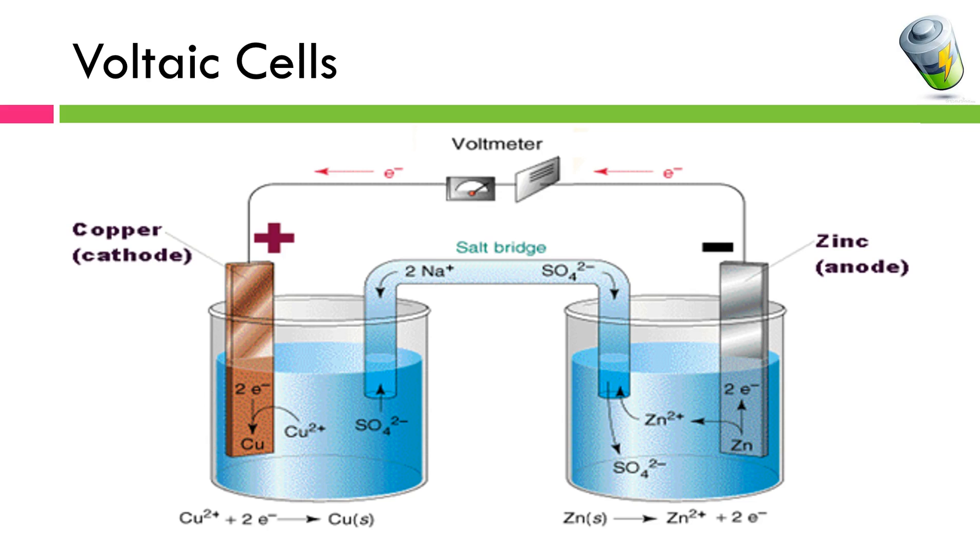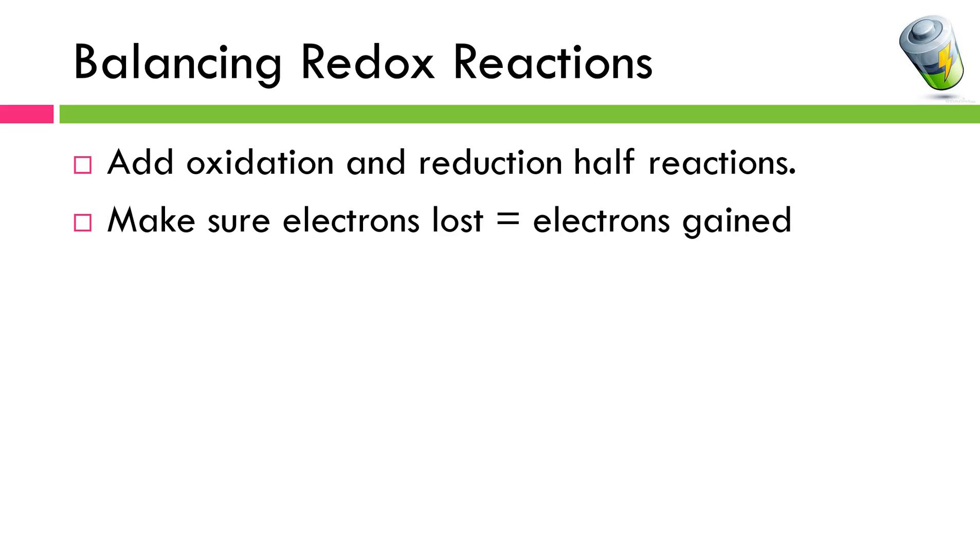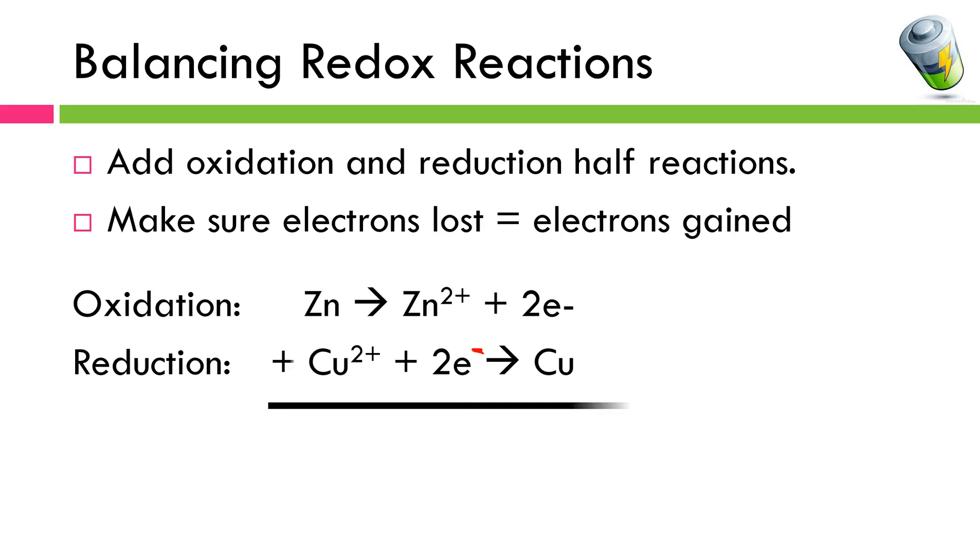We're going to take this one step further and talk about how to calculate the voltage that will be produced by a cell. In order to do that we need to talk a little bit about balancing redox reactions. We've already talked in the previous lesson that we've got oxidation and reduction half reactions for our redox reactions. The catch is making sure that the electrons that have been lost in oxidation are equal to the electrons that are being gained in reduction. So in our example we've got the oxidation of zinc and we've got the reduction of copper. Very conveniently, the electrons lost and the electrons gained are equal to one another. So we can really just add them up and cancel them out.